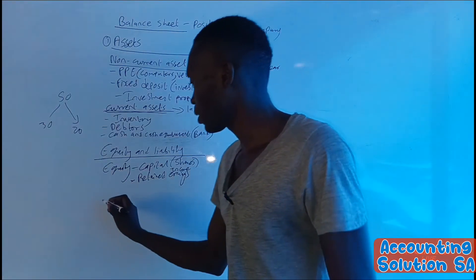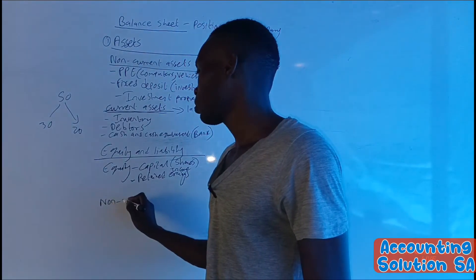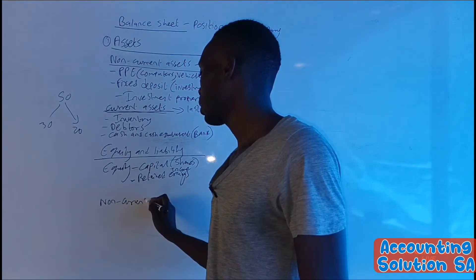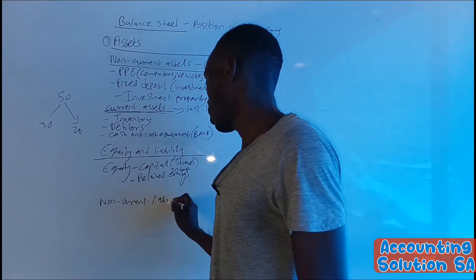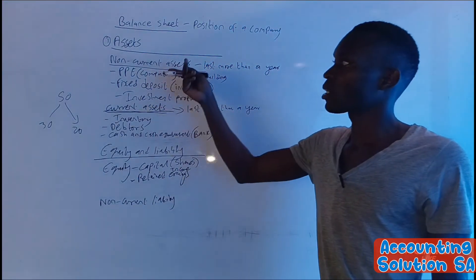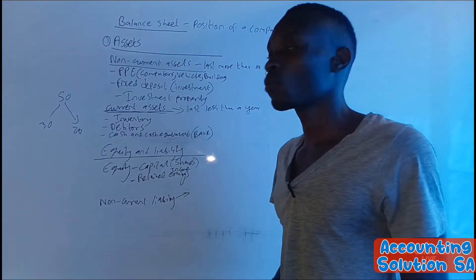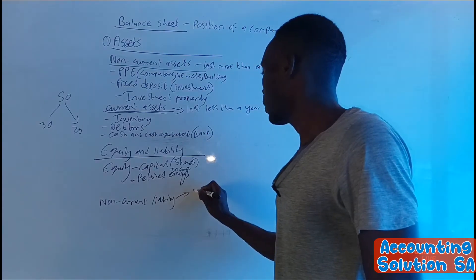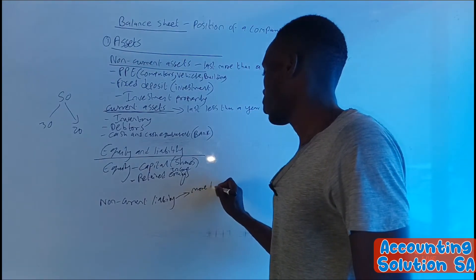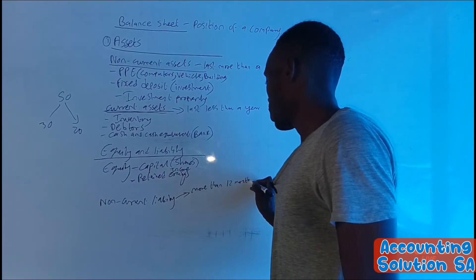Then after that, we're going to have the liability part. Under liability part, number one, we're going to start with non-current liability. Non-current liability is similar with non-current assets because we're going to repay this loan after more than 12 months.